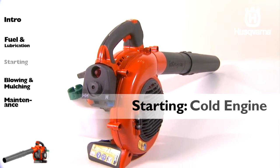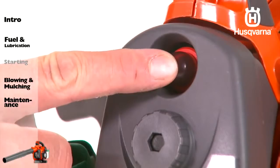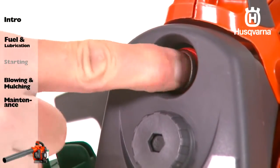To start a blower with a cold engine, begin by pressing the purge bulb up to 10 times or until fuel begins to fill the bulb. The purge bulb does not need to be completely filled.